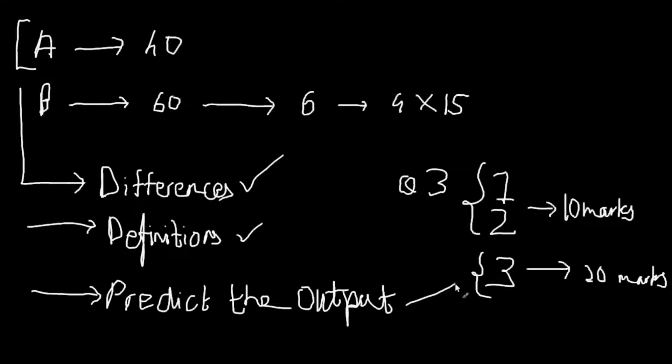Our board paper had 20 marks of just purely predict the output. Though usually they'll give you some pieces of code, they'll tell you to correct it, or something. But for us, it was all predict the output. So this part, predict the output, is not just theory, it's also a bit of practical. You get it once you do programs. That's how it works.